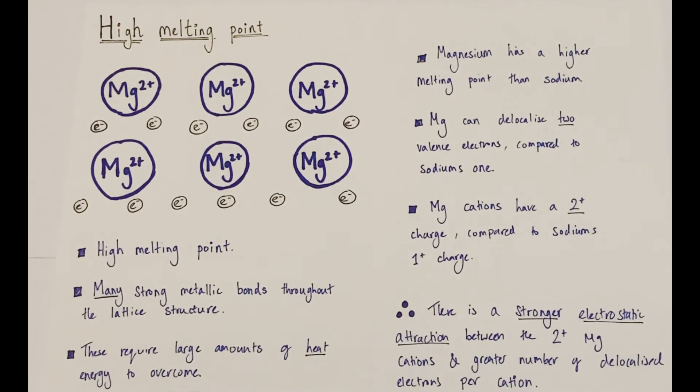Magnesium, being a group 2 metal, is able to delocalize two outermost electrons, sometimes known as valence electrons, per atom. Compared to sodium only being able to delocalize one electron per atom. This means that once that's occurred, magnesium cations will have a 2 plus charge. Whereas sodium cations will only have a 1 plus charge.